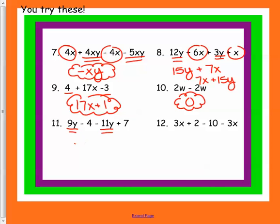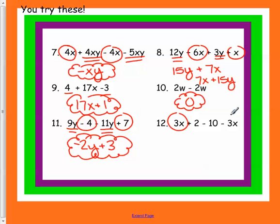9y minus 11y is a negative 2y, and a negative 4 plus a positive 7. Different signs, take the sign of the bigger and subtract, and we get negative 2y plus 3. Over here, the 3x and the negative 3x cancel each other out, so I'm just left with a positive 2 minus 10. Different signs, subtract, take the sign of the bigger. And that's all I have for you today, so I will see you next time.